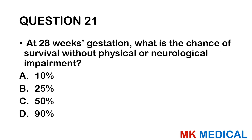Question twenty-one: At 28 weeks gestation, what is the chance of survival without physical or neurological impairment? A, 10%; B, 25%; C, 50%; D, 90%. What really limits survival is pulmonary development. At 28 weeks, there is some lung development for the child to survive outside the uterus, and we have had preemies survive. More than 90% of these children actually survive.